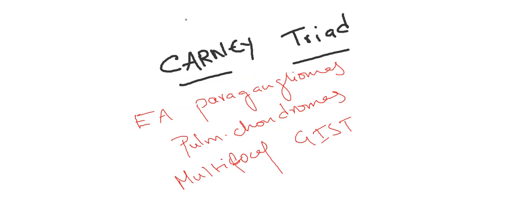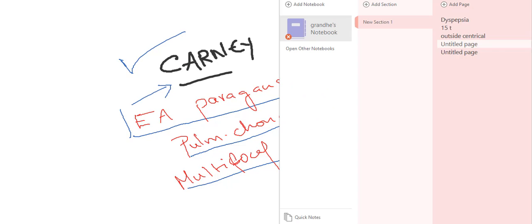Coming to the associations of GIST, there is a triad by the name Carney triad, which includes extraadrenal paragangliomas, pulmonary chondromas, and multifocal GIST. Coming to treatment - treatment is mainly surgical treatment.